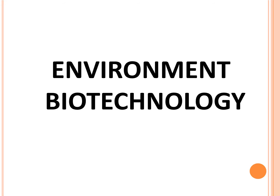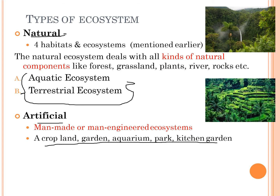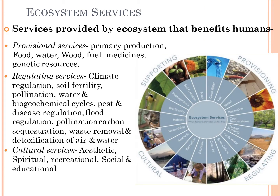Welcome back to the video. In this video we'll be talking about environmental biotechnology. Previously we talked about ecosystems and some of its components, so in this video we'll be talking about types of ecosystems and their broader ranges. Types of ecosystems mainly has two types: natural or artificial. Natural ones include aquatic and terrestrial ecosystems, whereas artificial ones include cropland, aquarium, park, and kitchen gardens.